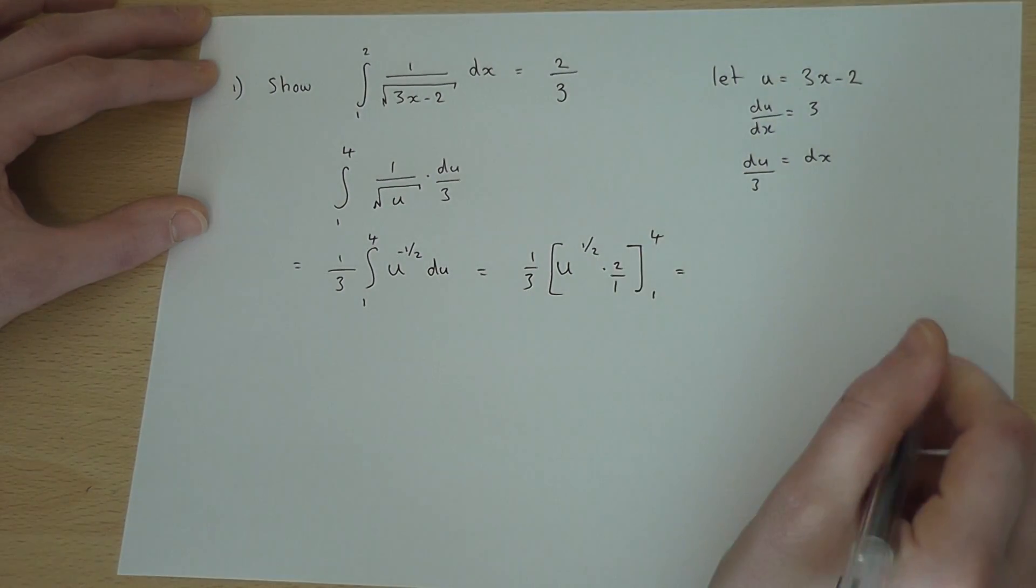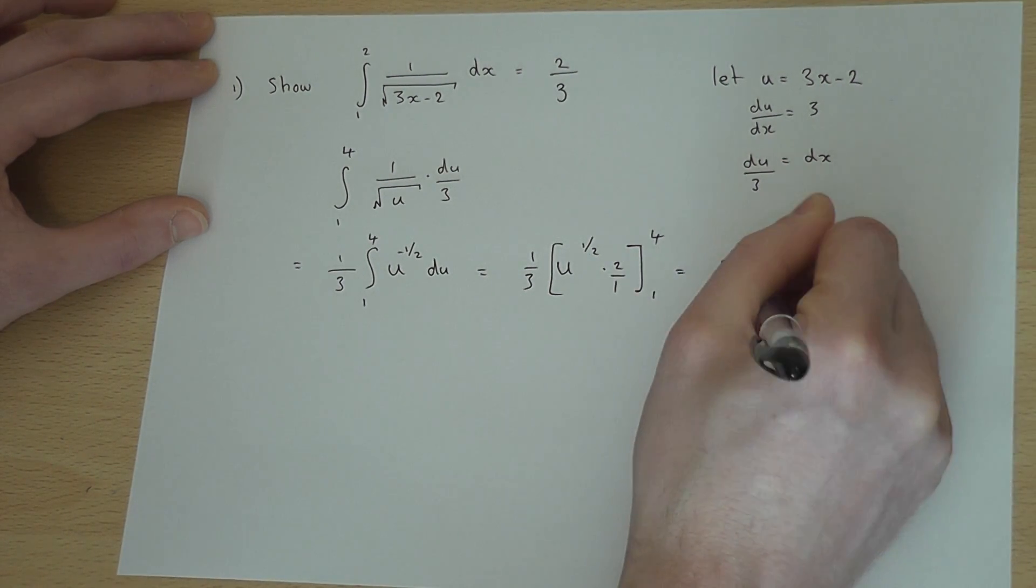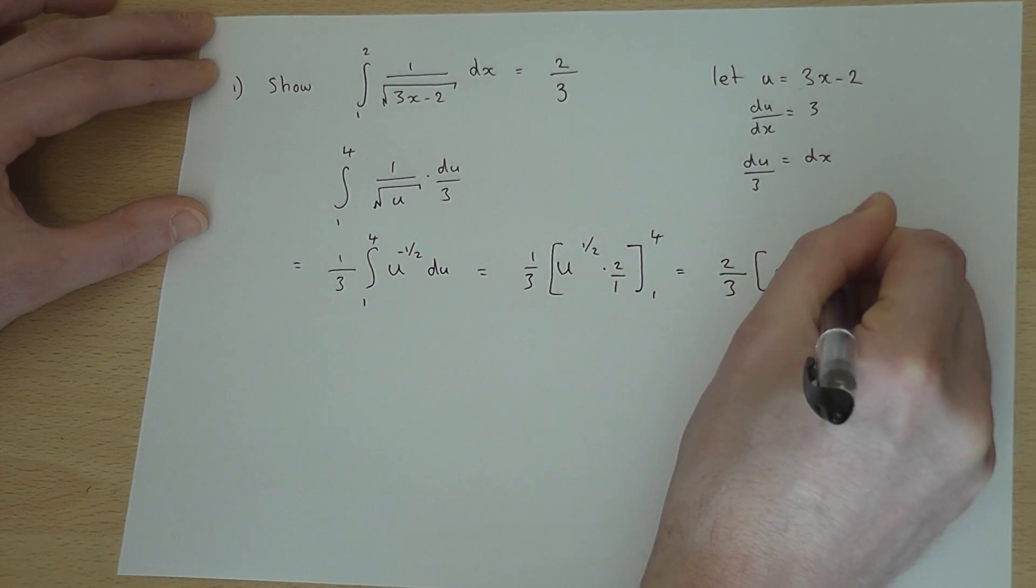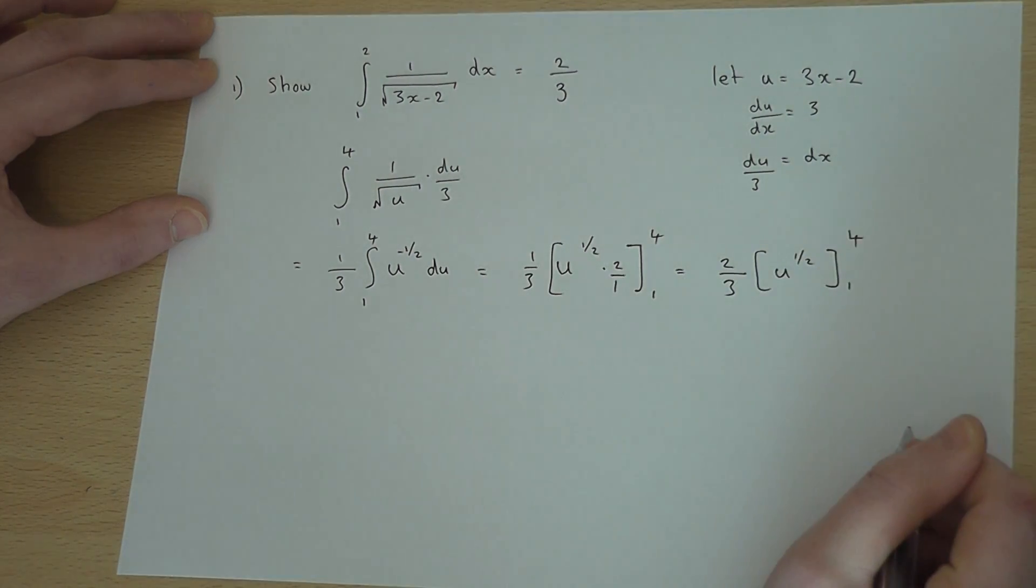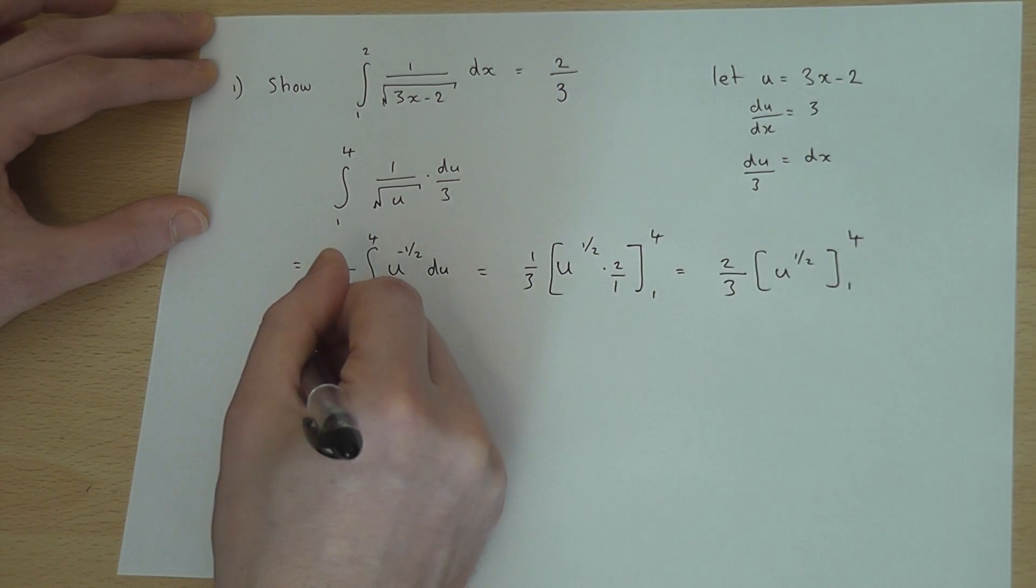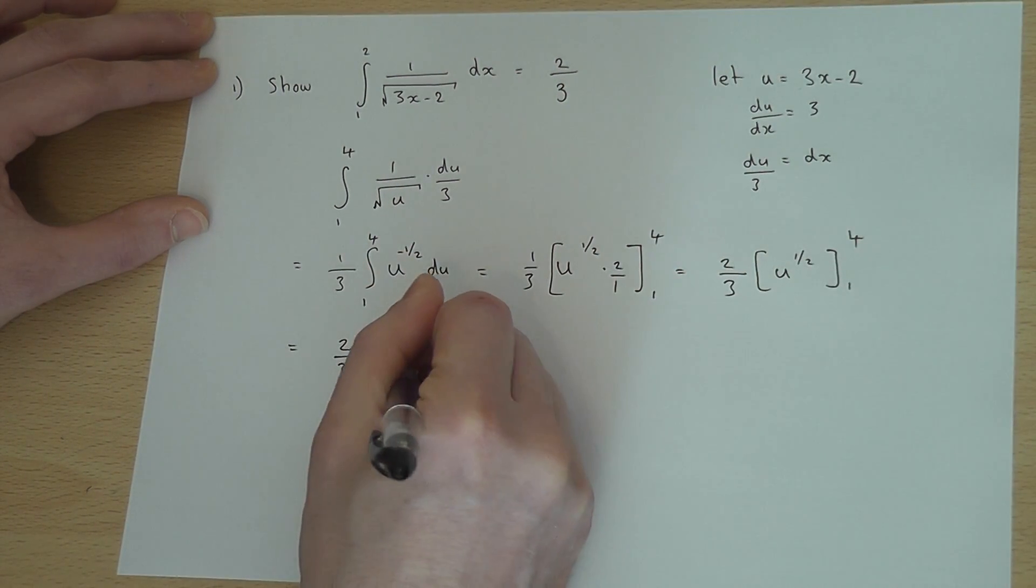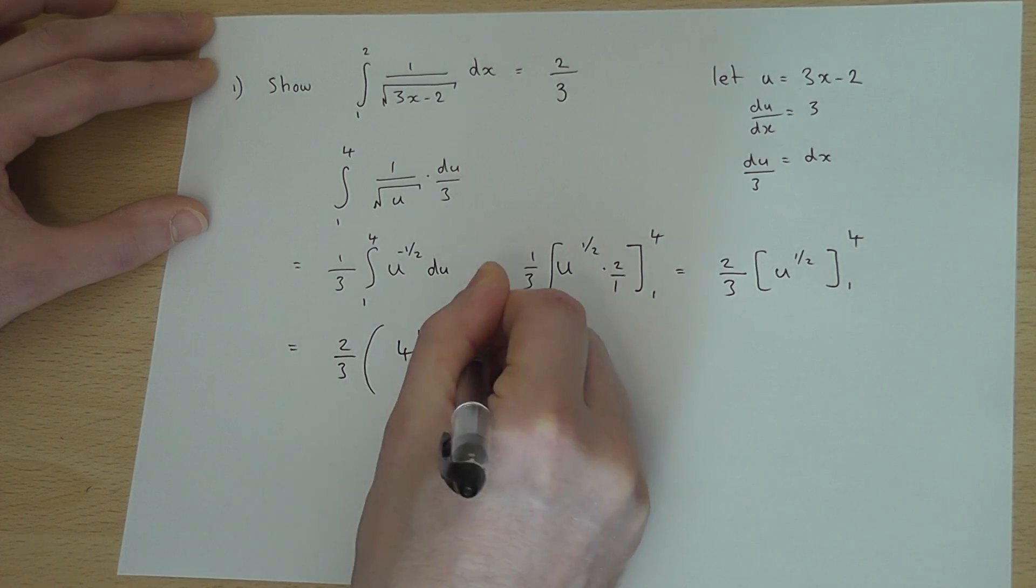So effectively, it is 1 third times 2. It's 2 thirds u to the half between 1 and 4. I now put the value of 4 and 1 in and find the difference. So I've got 2 thirds, that's my factor. I've got 4 to the power of 1 half minus 1 to the power of 1 half.